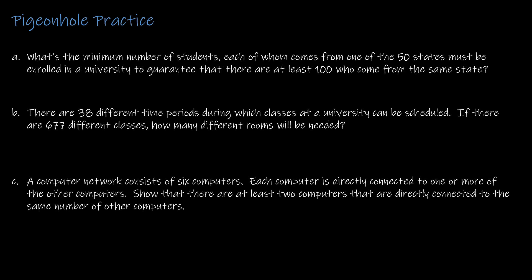For the first one, this is structured in the same way that we have done a couple of other questions. We are solving for n, we're saying what's the minimum number of students, n, each of whom comes from one of the 50 states, that would be considered the number of bins that we have, or boxes, enrolled in a university to guarantee at least 100. So if I were to set this up, I would say n divided by 50 equals 100. And then remember, the easiest way to solve this is to say n minus 1 divided by 50 is equal to 100 minus 1, which is 99. To solve, I would multiply each side by 50. So I would get n minus 1 is equal to 4,950. So I would need, adding one to each side, n to be 4,951. I would need a minimum of 4,951 students to ensure that I have at least 100 from the same state.